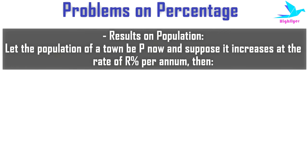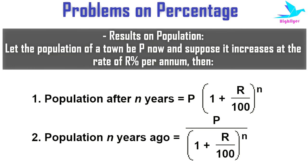Now let's see results on population. Let the population of a town be P now, and suppose it increases at the rate of R percent per annum. Then population after N years will be equal to P into (1 + R/100) to the power N, and population before N years would have been P by (1 + R/100) to the power N.